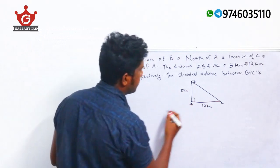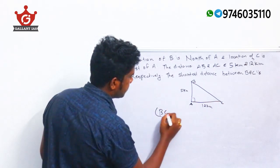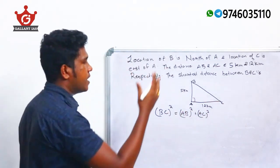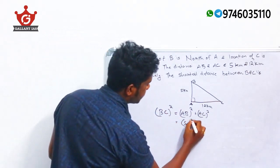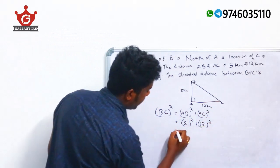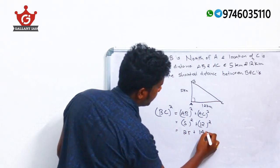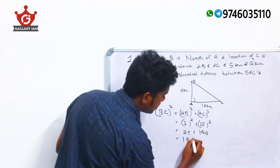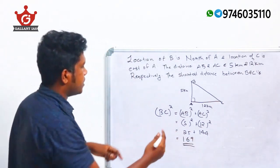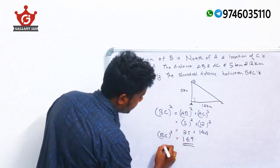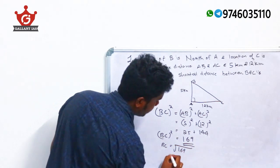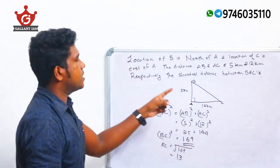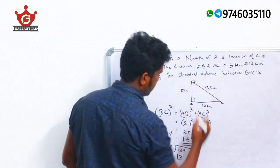Applying Pythagoras theorem: BC² = AB² + AC² = 5² + 12² = 25 + 144 = 169. Therefore BC = √169 = 13 km. The shortest distance between B and C is 13 kilometers.